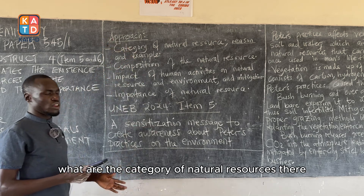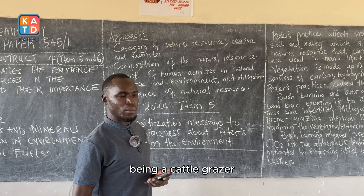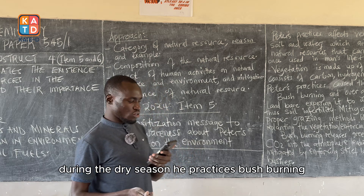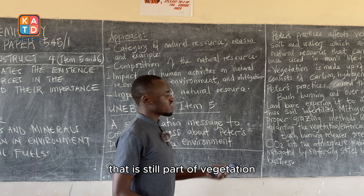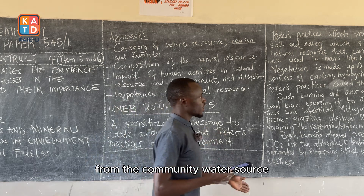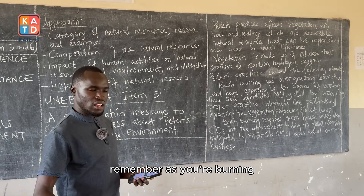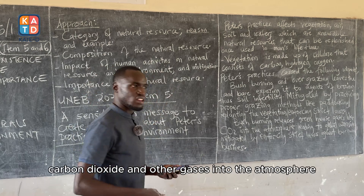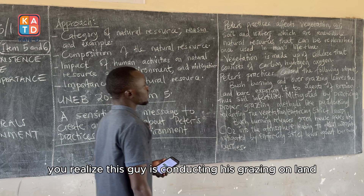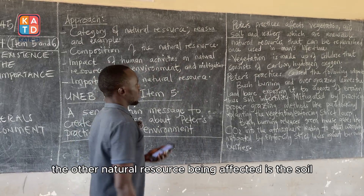Identify the natural resources being affected in the scenario. Peter grazes cattle, meaning he is affecting vegetation. During the dry season, he practices bush burning — still burning down the grass, which is part of vegetation. He also takes his cattle to drink water from the community water source, so water is another natural resource being affected. As he burns, there is emission of carbon dioxide and other gases into the atmosphere, meaning air is also being polluted. Since he is grazing on land and burning away grass, he is also killing components in the soil — so soil is another natural resource being affected.